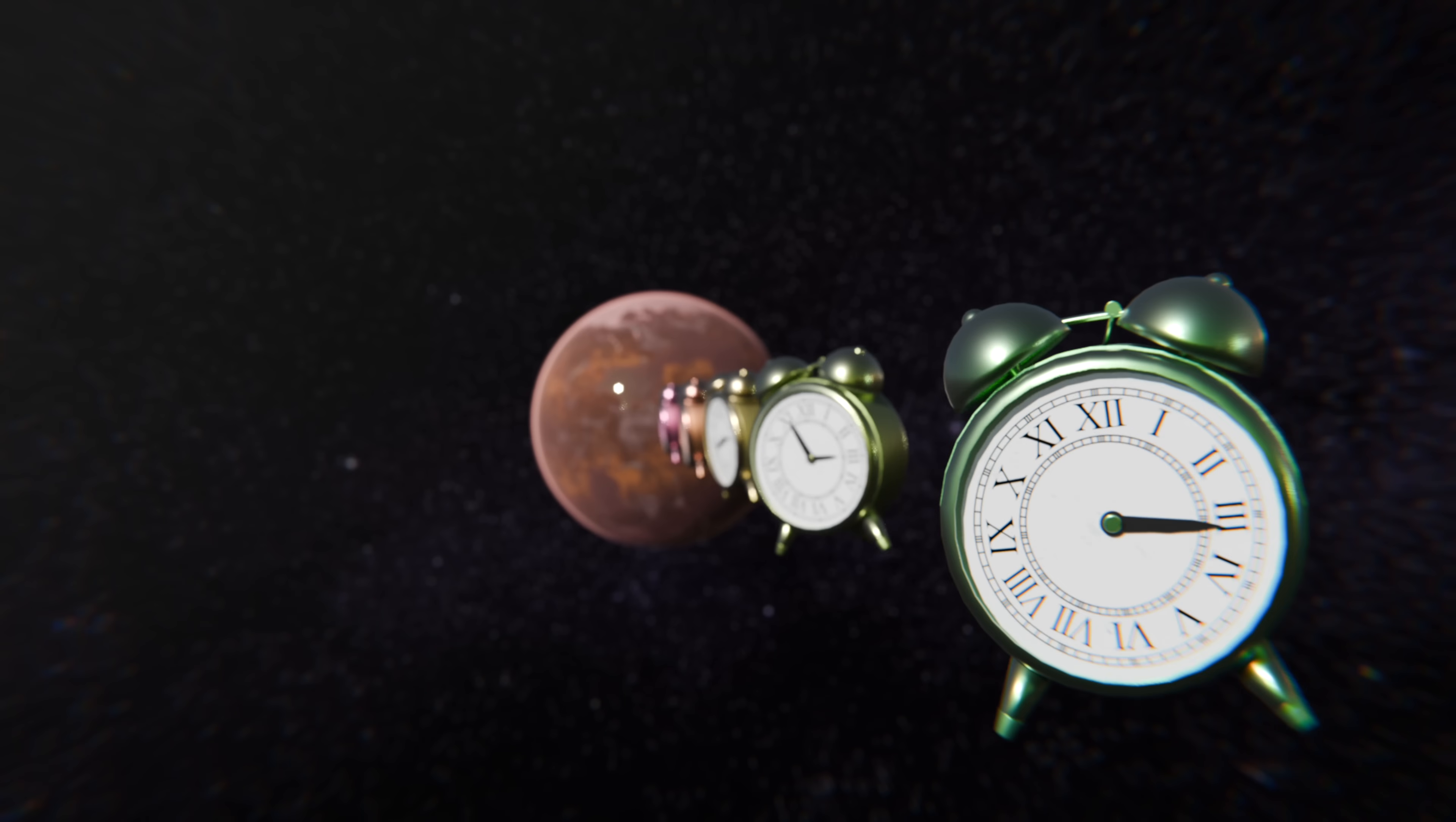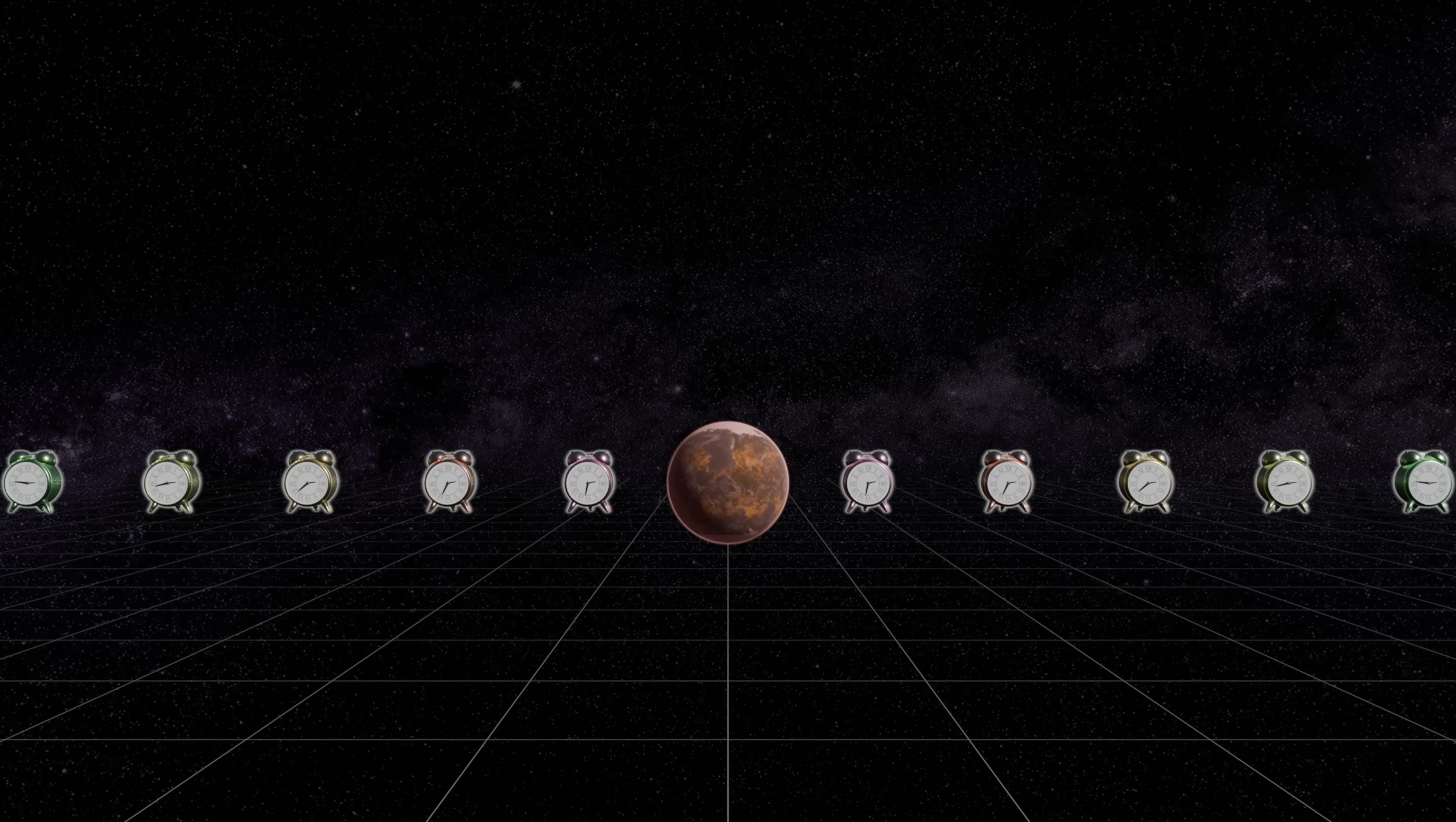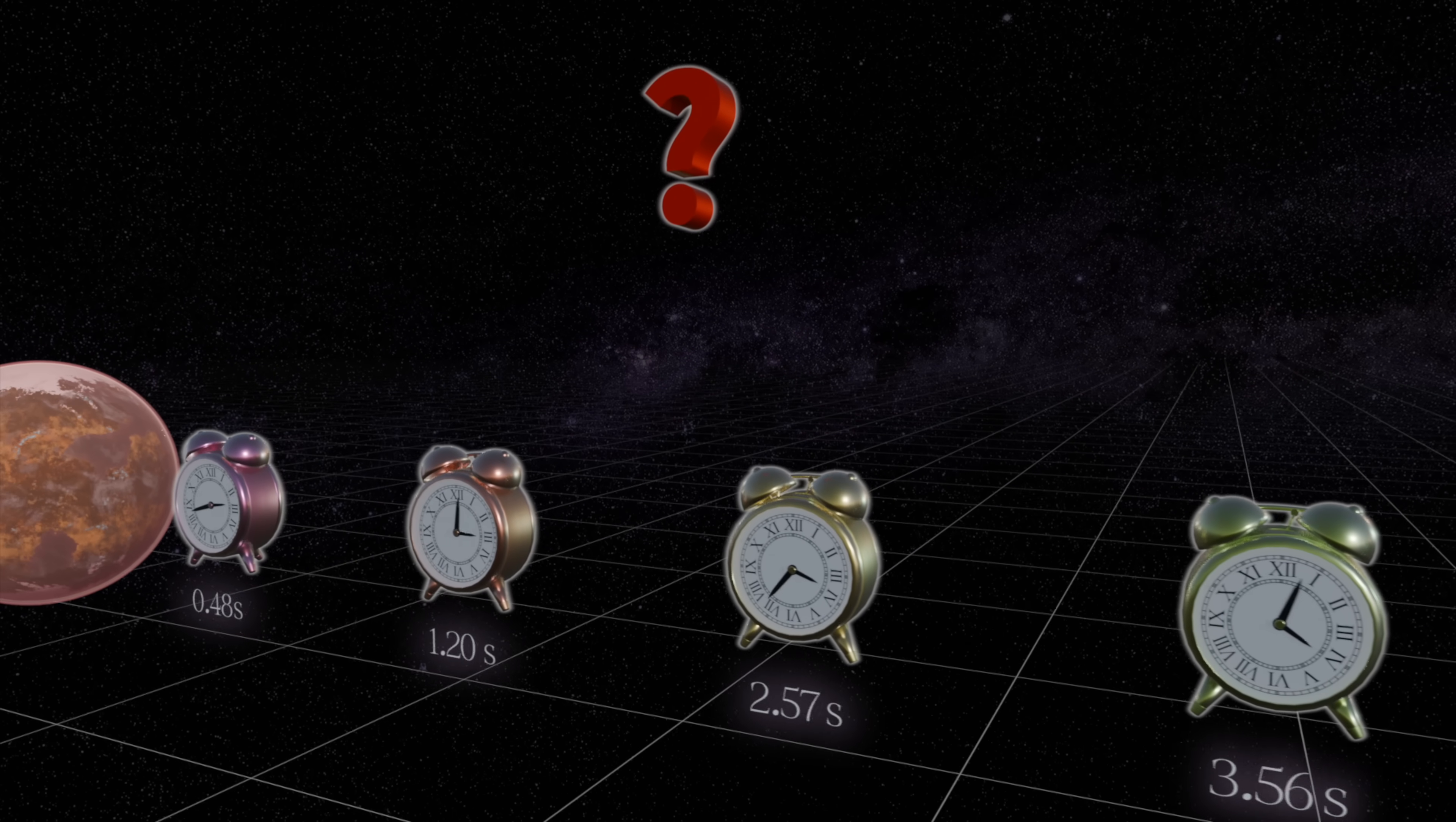It's a well-known experimental fact that clocks closer to a body of mass will tick more slowly than those farther out, a phenomenon known as gravitational time dilation. But what actually determines the precise rates of such ticking? That is, what causes this time dilation?